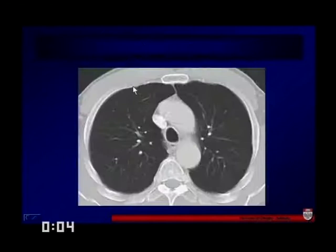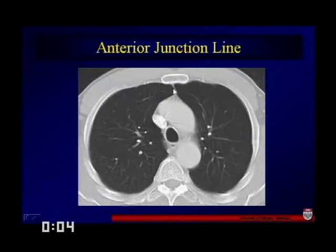In this case, we have the anterior junction line by CT. You can see this is where the lungs come together, and if there were any kind of significant anterior mediastinal mass, we wouldn't be able to see that.